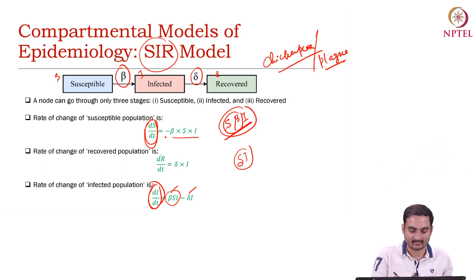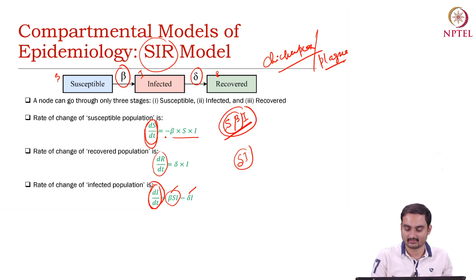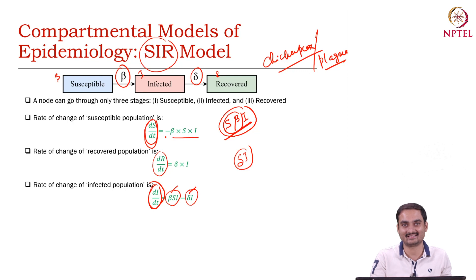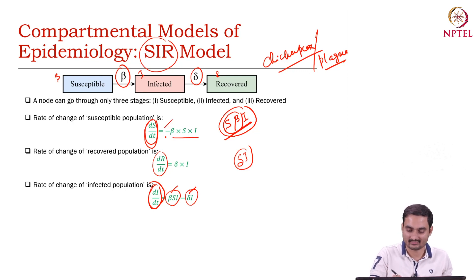And what is the rate of change of recovered users? Basically it is the delta times I term. When the population gets decreased, we use a negative symbol; otherwise a positive symbol.